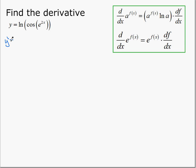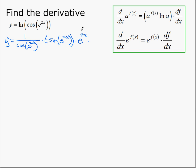We take the derivative from the outside in. First, the natural log gives 1 over everything inside stays the same, multiplied by the derivative of what was inside. The derivative of cosine is negative sine, and the part in brackets stays the same, multiplied by the derivative of what was in the brackets. The derivative of e to the 2x is e to the 2x, multiplied by the derivative of the exponent, which is 2. So lots of chain rule — just one part changes at a time: first the ln, then the cosine, then the e to the x, then the exponent.